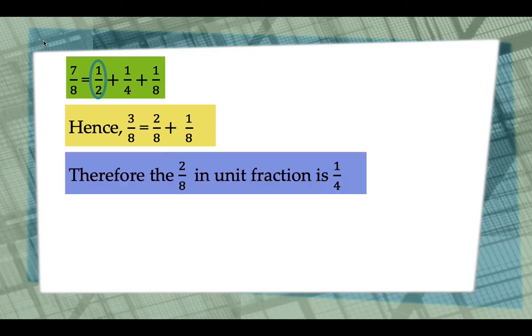Therefore, the 2/8 in unit fraction is 1/4. Hence, the result is, 7 over 8 is equal to 1/2 plus 1/4 plus 1/8.